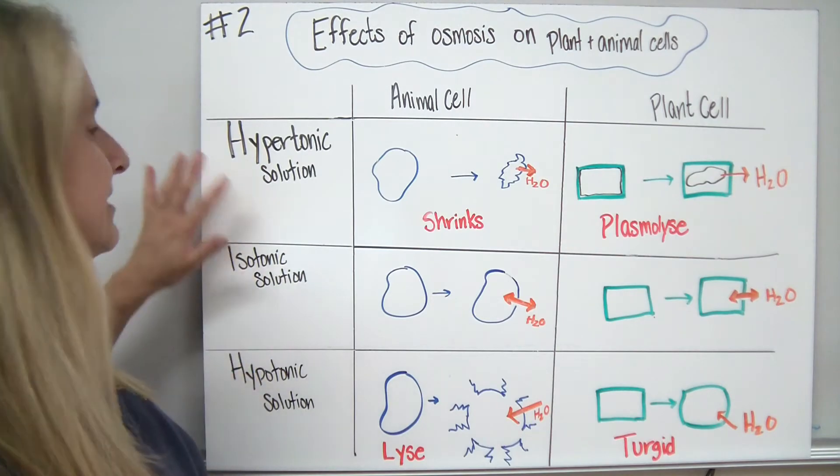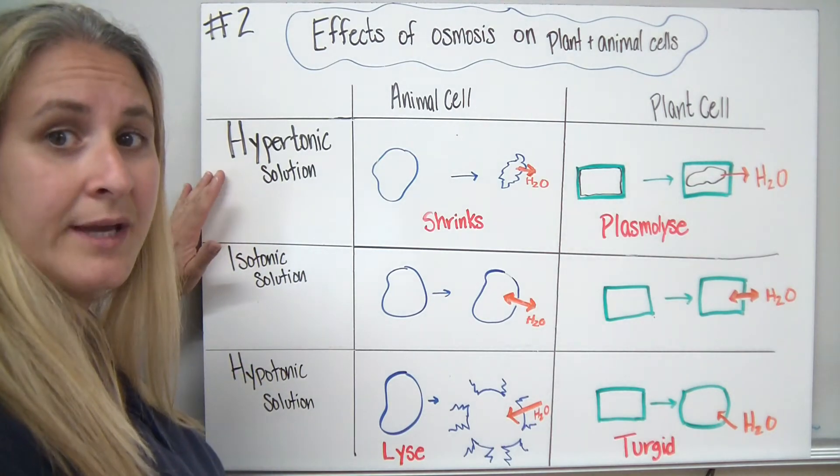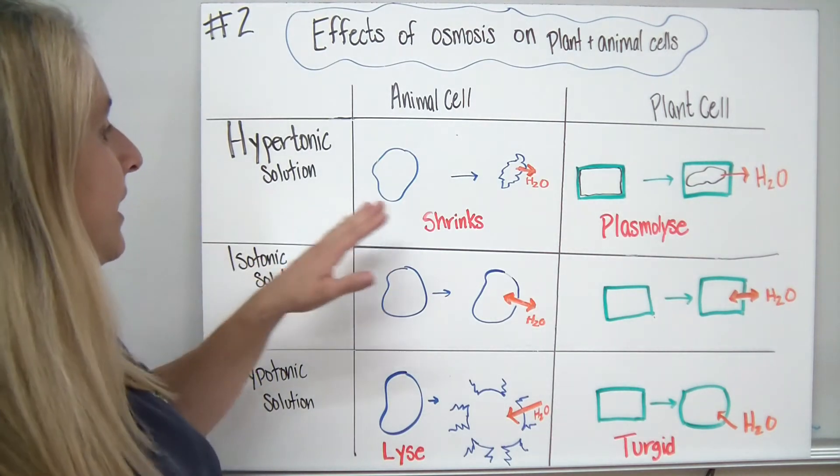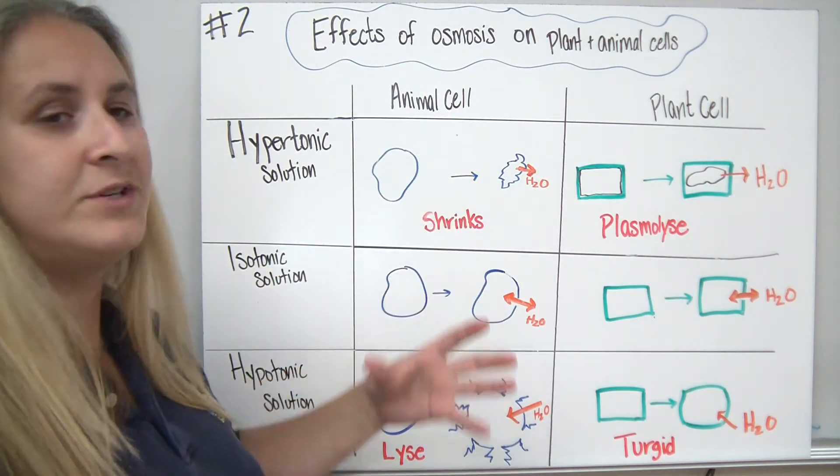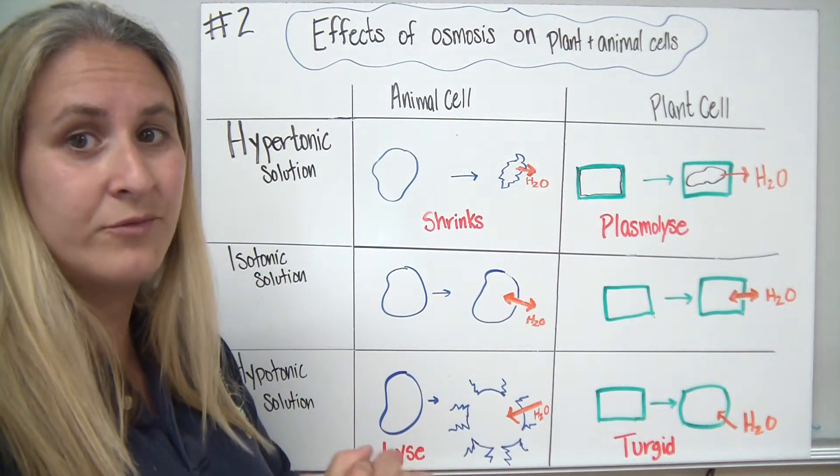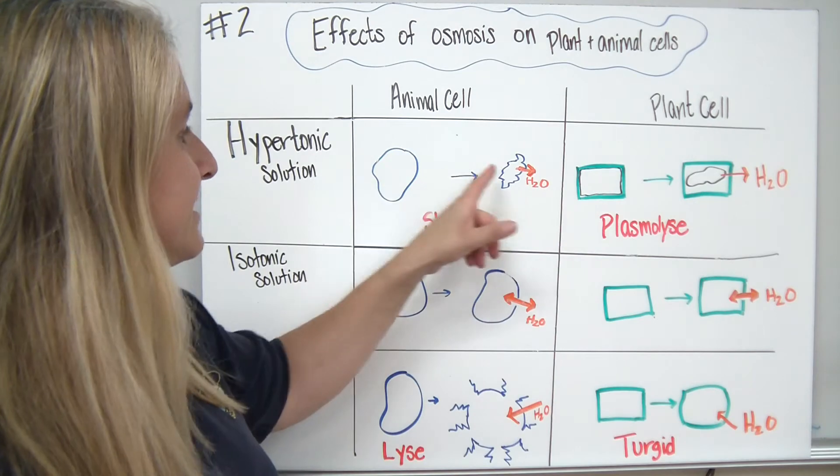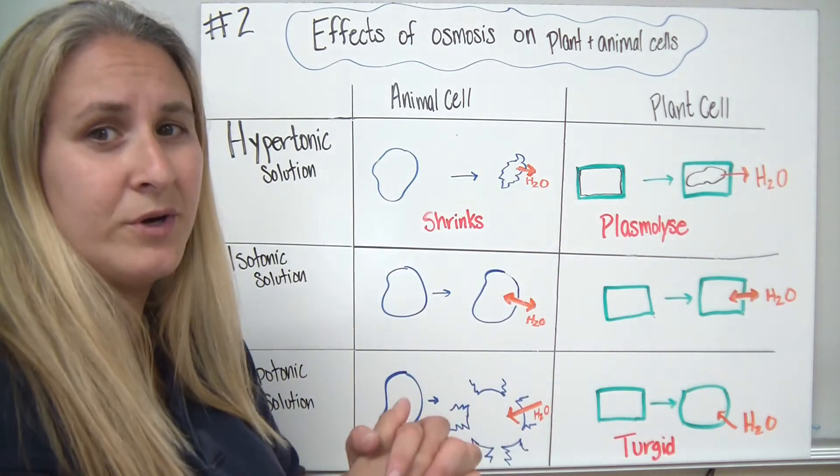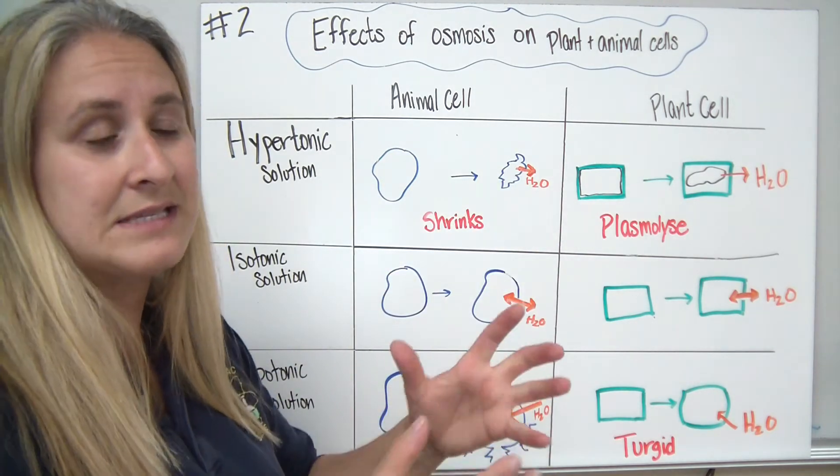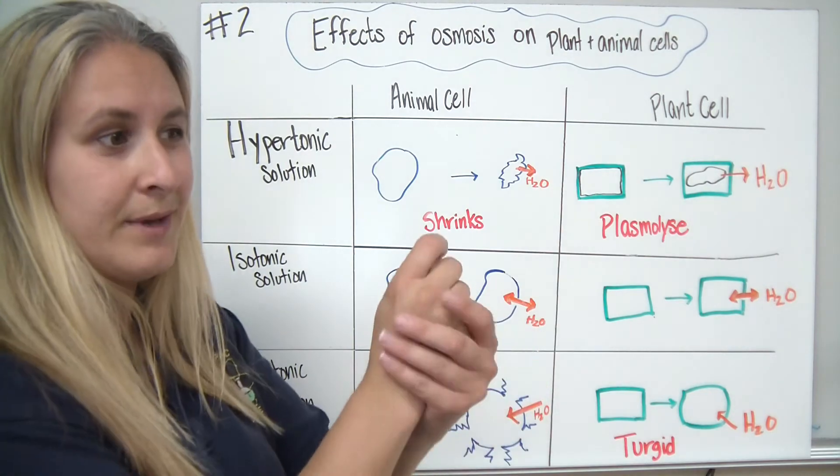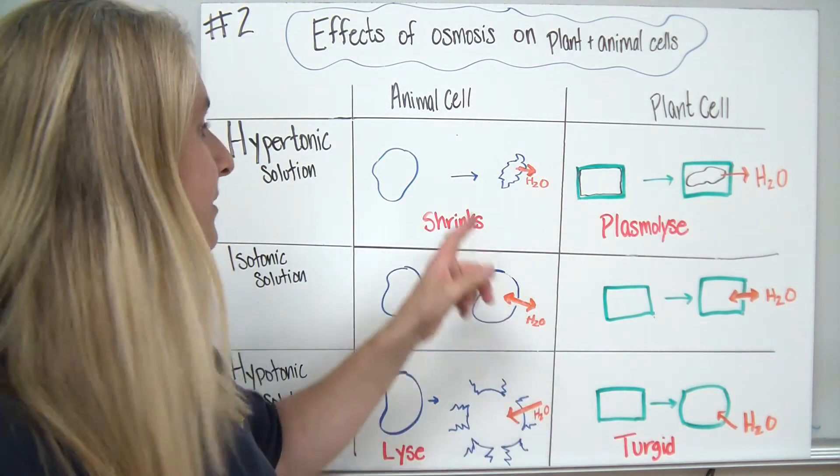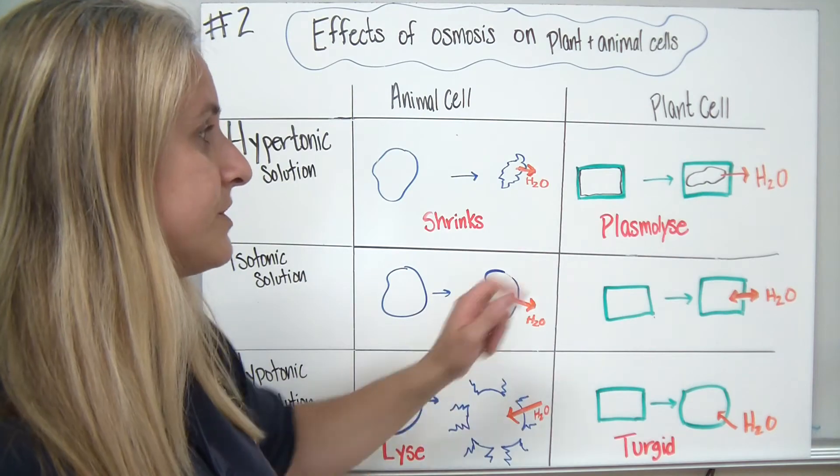So here are our three words again, slightly rearranged. We start with a hypertonic solution. The hypertonic solution in an animal cell, remember, doesn't have a rigid cell wall. The cell itself would appear to somewhat shrink in size because that cytoplasm has shrunk. The cell membrane will stay surrounding the cytoplasm, and that's because the water moves out.